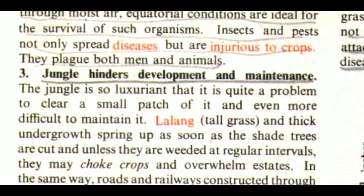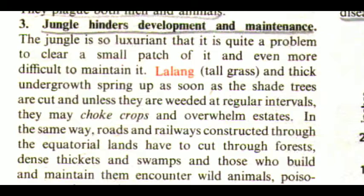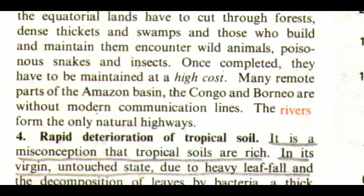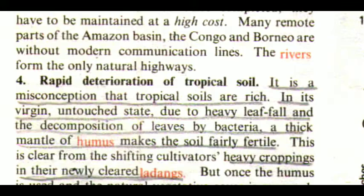The third factor is that the jungle hinders development and maintenance. The jungle is so luxuriant that it is quite a problem to clear even a small patch of it, and even more difficult to maintain, as tall grass and thick undergrowth spring up as soon as the shade trees are cut. Unless weeded at regular intervals, they may choke crops and overwhelm estates. Roads and railways constructed through equatorial lands must cut through forests, dense thickets, and swamps, and those who build and maintain them encounter wild animals, poisonous snakes, and insects. Many remote parts of the Amazon basin, the Congo, and Borneo are without modern communication lines; rivers form the only natural highways.